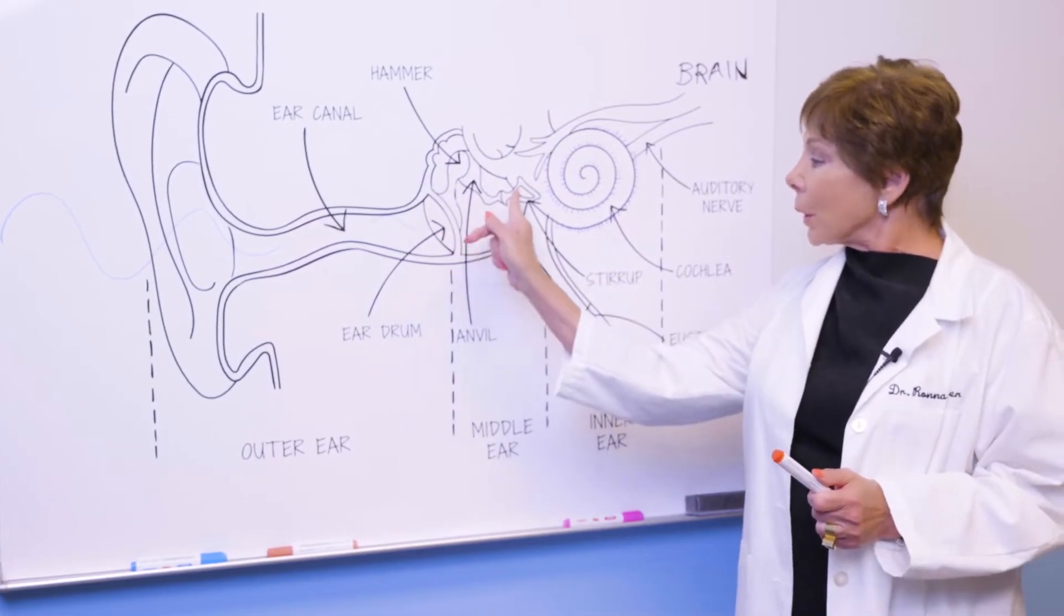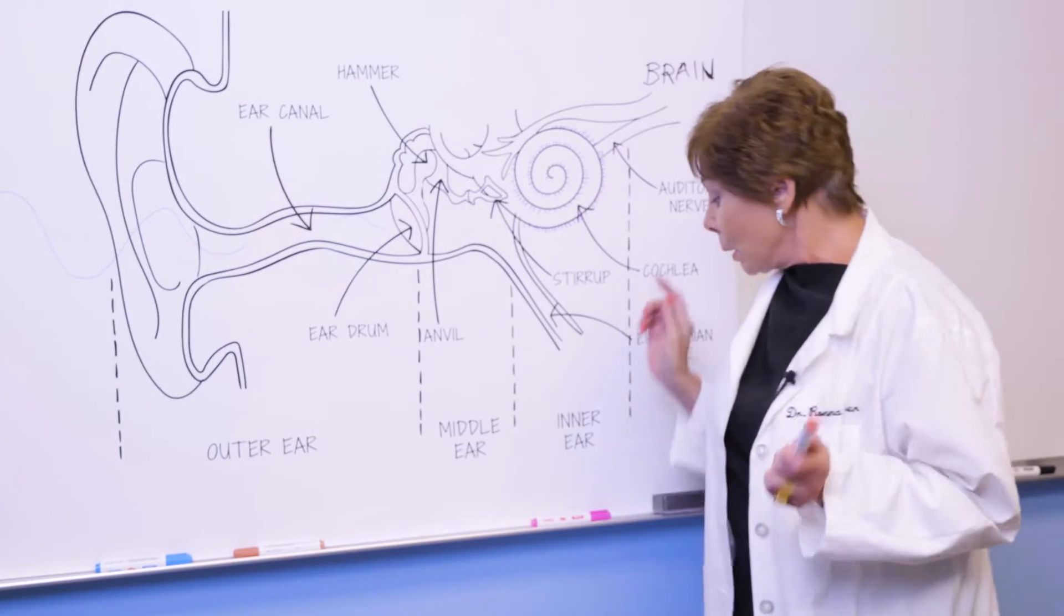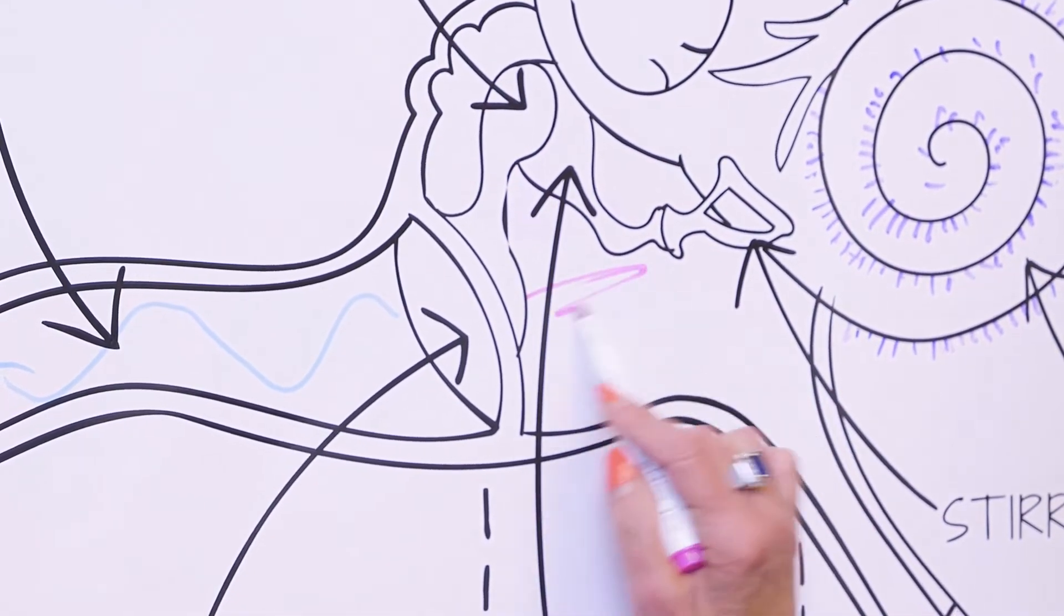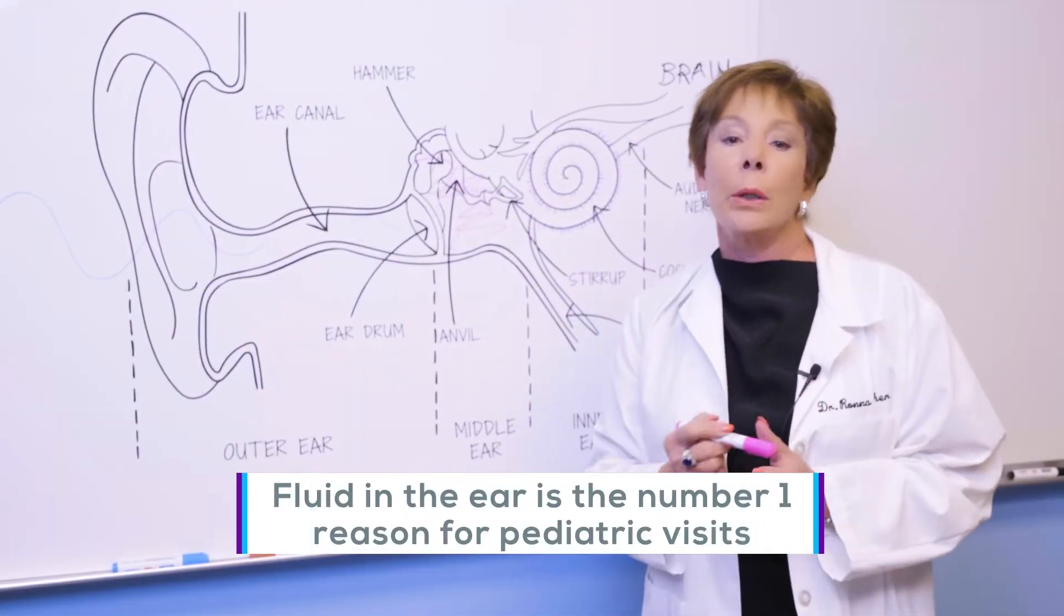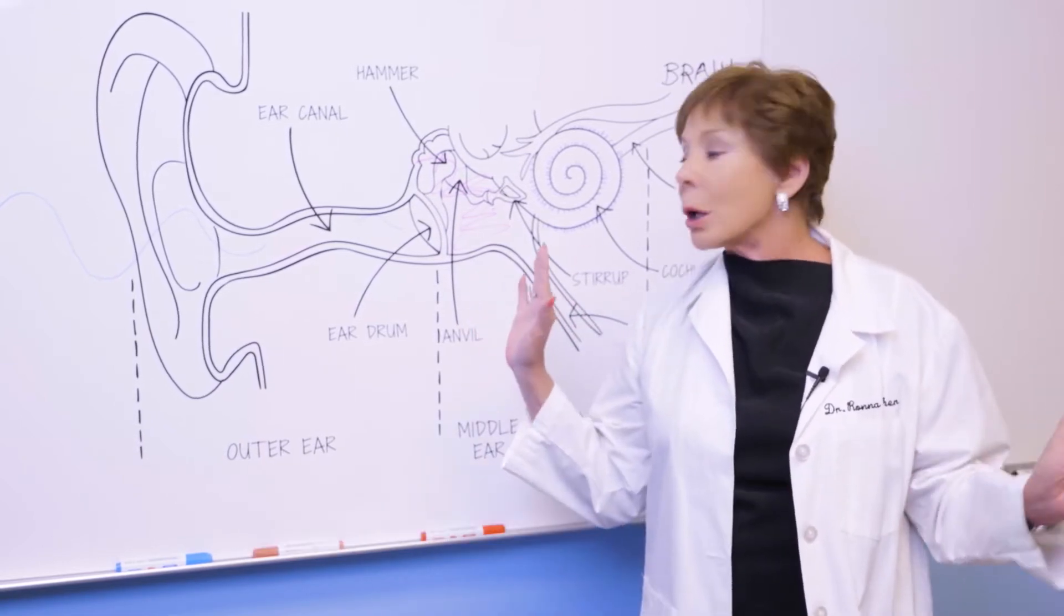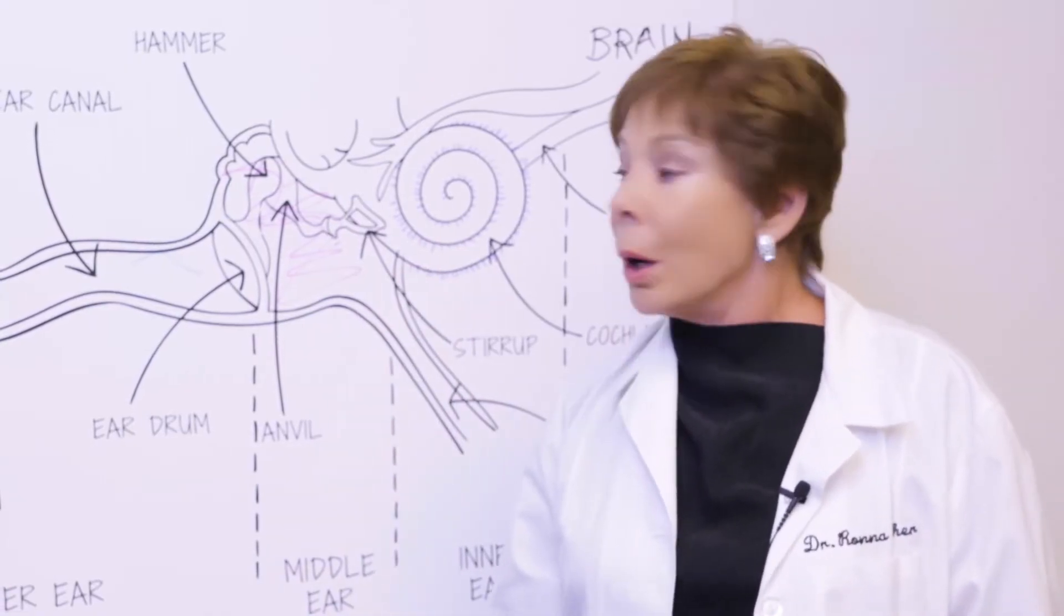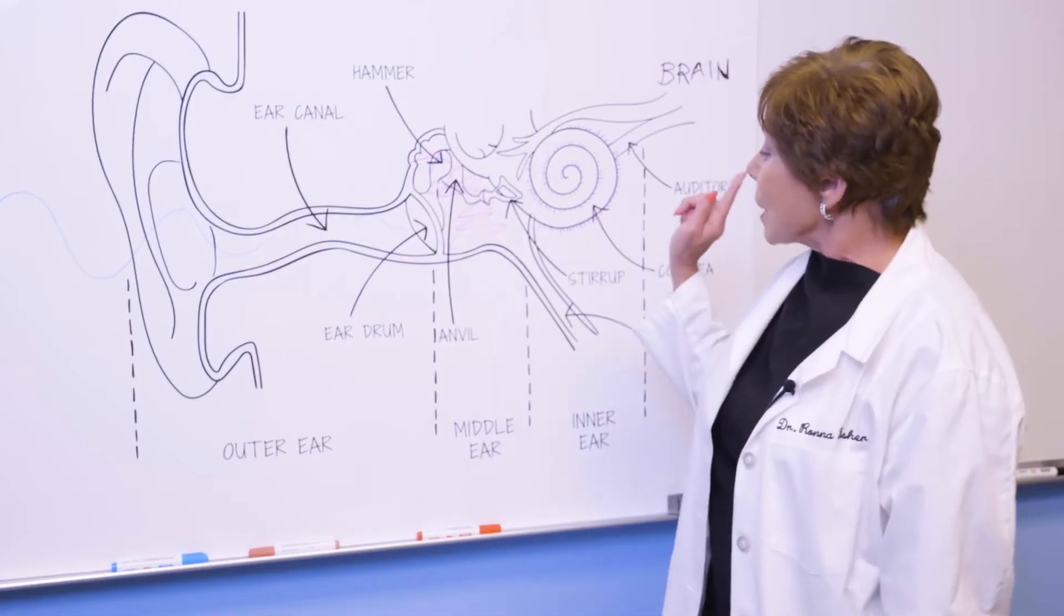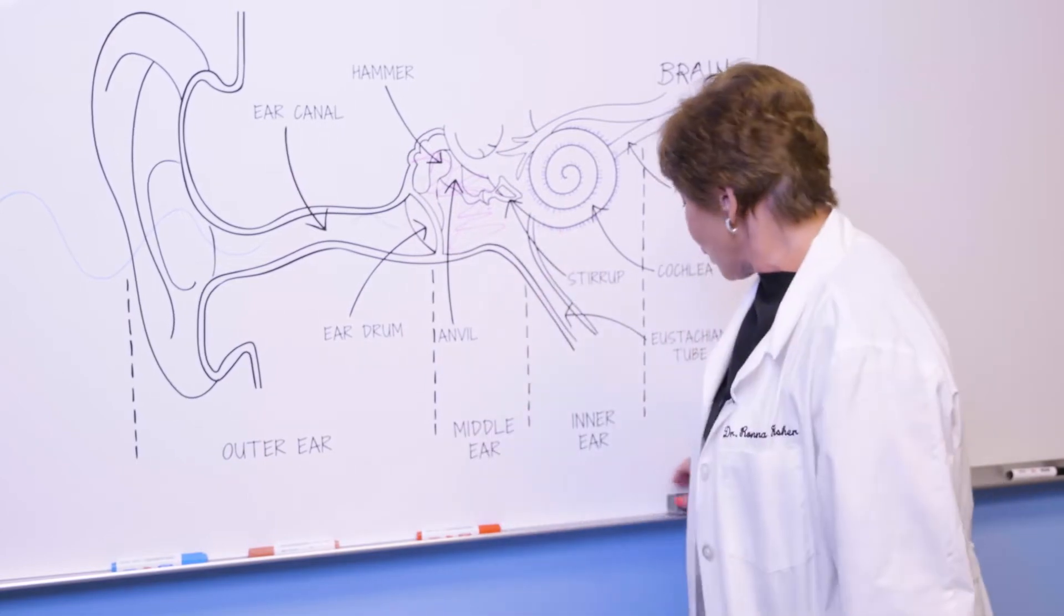Now, sound goes to your middle ear, and these little bones should start to vibrate. But, what if there's fluid in here? Fluid in the ear is the number one reason for pediatric visits. It's the most common ailment in childhood. Fluid often clears up on its own. Sometimes it needs antibiotics, and sometimes the doctor has to put a little hole in the eardrum to drain out all the fluid.